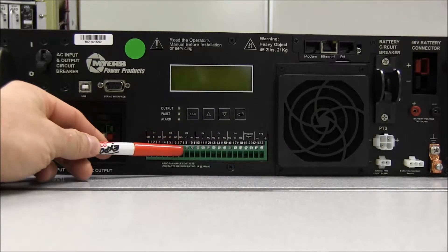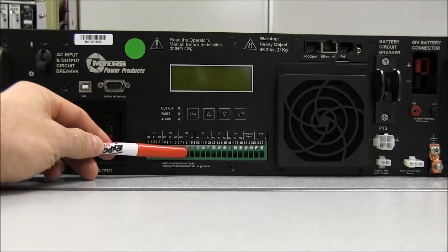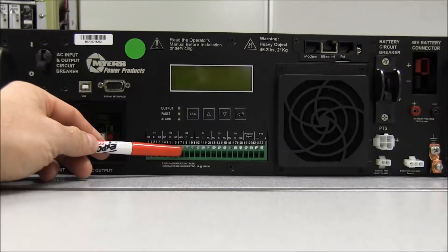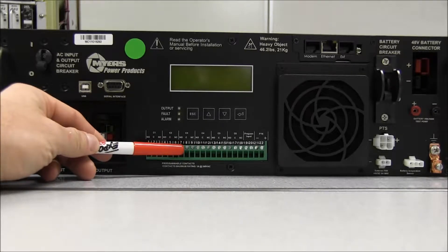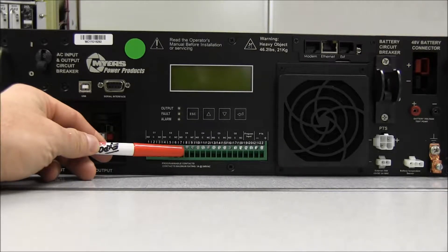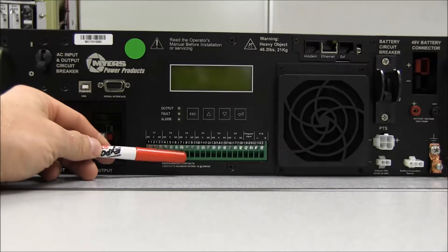So once these contacts here, we have common, we have normally open and normally closed. We would use normally open and common. So when the batteries are normal, the situation here is going to be normally open. So we have a normally open contact. When the batteries get to 40% or less, which for us is going to be 47.5 volts on a 48 volt system, these contacts at normally open will close to common.